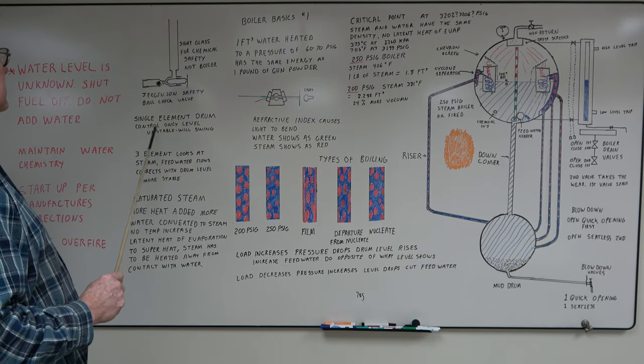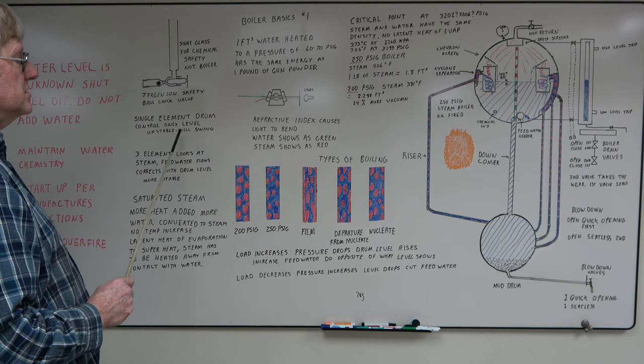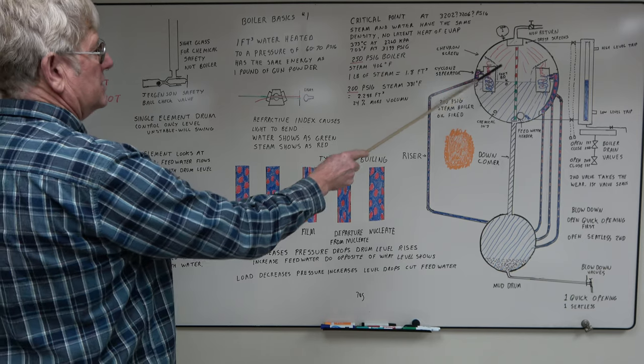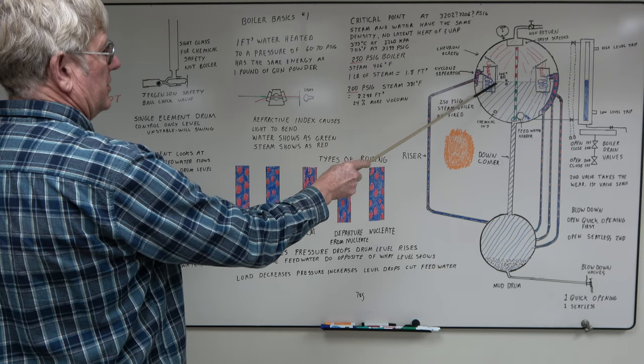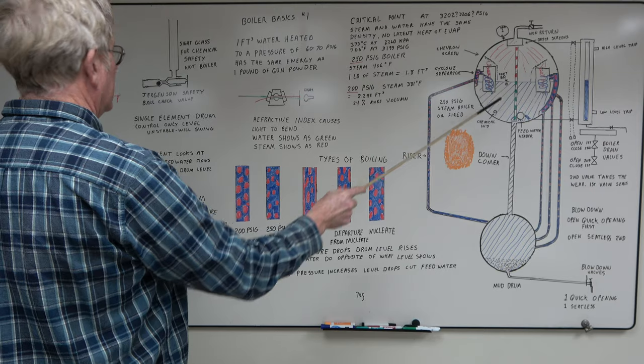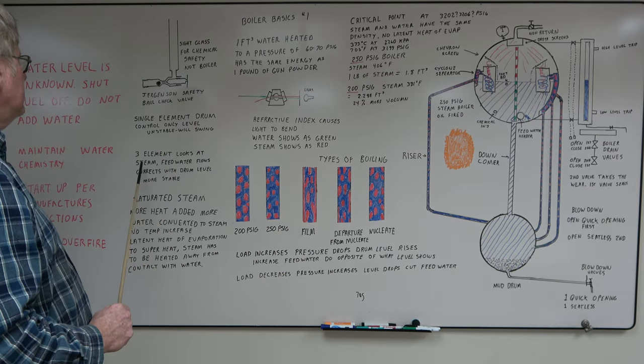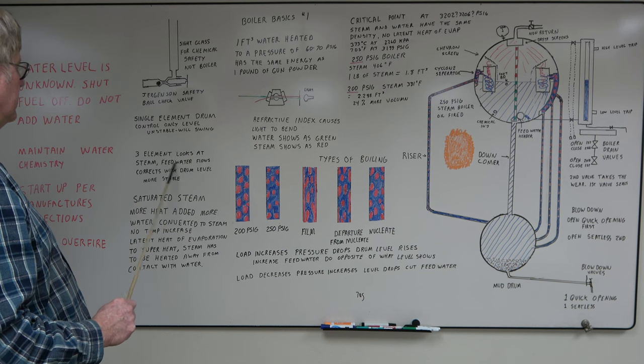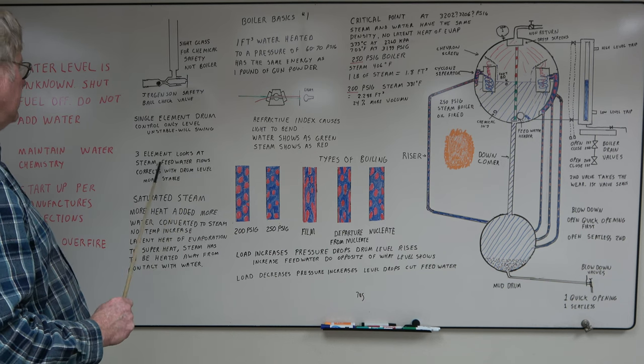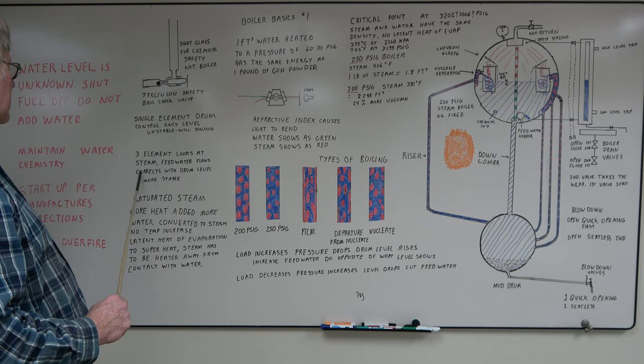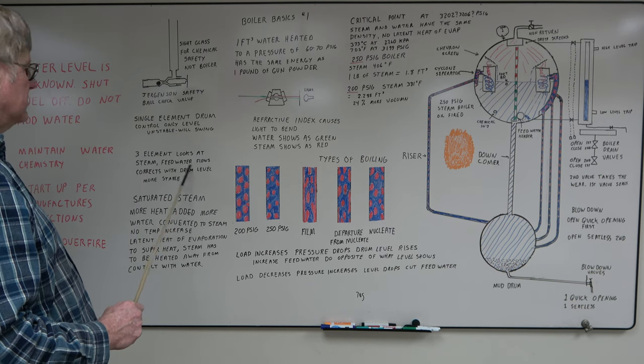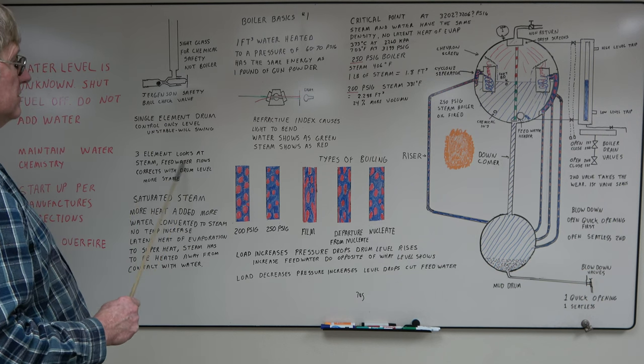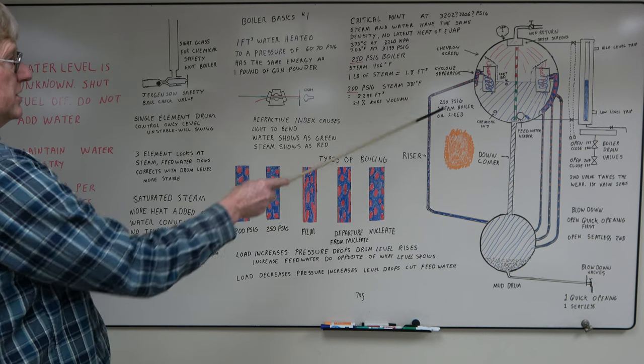A single element drum level control only looks at level. It's fairly unstable and these kind of problems you're going to see. As soon as this level goes high, it's going to shut down the flow. You're going to get back to normal. Unless the pressure comes up, now you're going to really drop. The three element that looks at steam and feed water flows, it tries to balance the steam flow with the feed water flows. It's a forward looking type controller. It corrects with the drum level. It's a lot more stable. If it sees a high steam flow increase, it's going to kick up the feed water and it'll correct the drum level. It takes a lot of this swinging problems out.